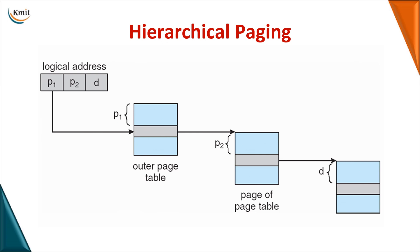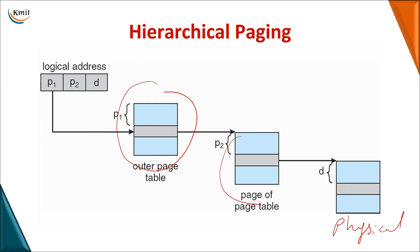The logical address in two-level form uses P1 to map into the outer page table, then that value maps into the inner page table, and finally the displacement value retrieves data from physical memory. This is the mapping between the logical address and the physical address in two-level paging.